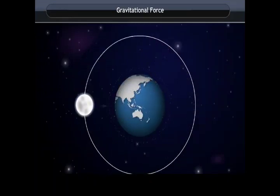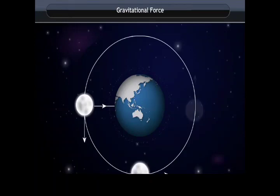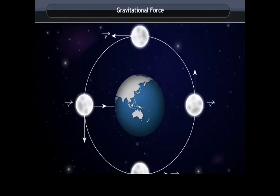The Moon and Earth system is exactly the same case — the Moon revolves around the Earth, but the only difference is that the imaginary thread is gravitational force. As the Moon revolves, its direction changes continuously, meaning its velocity changes, and any change in velocity means acceleration. This acceleration is the centripetal force that keeps the Moon in circular orbit.